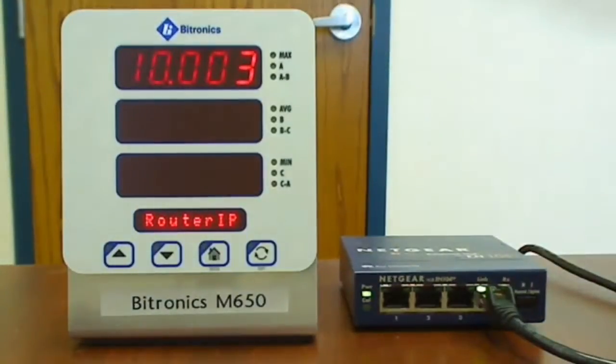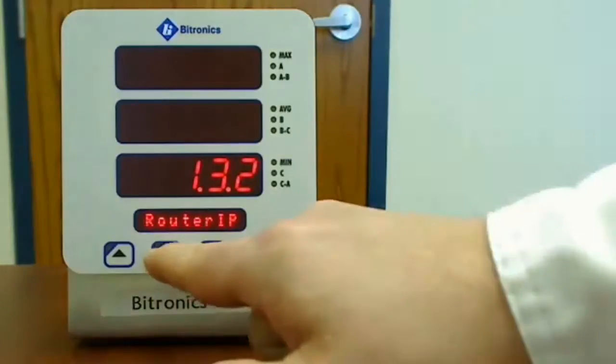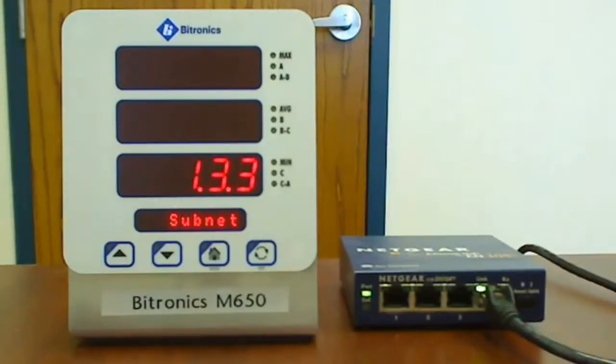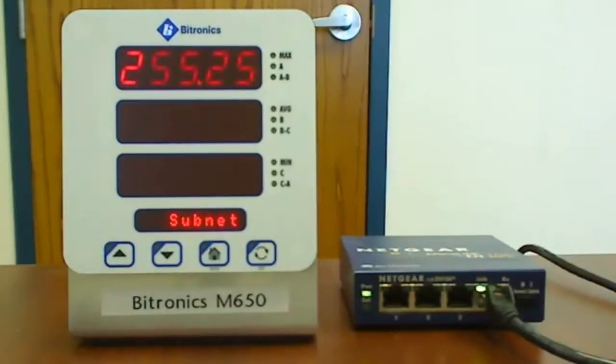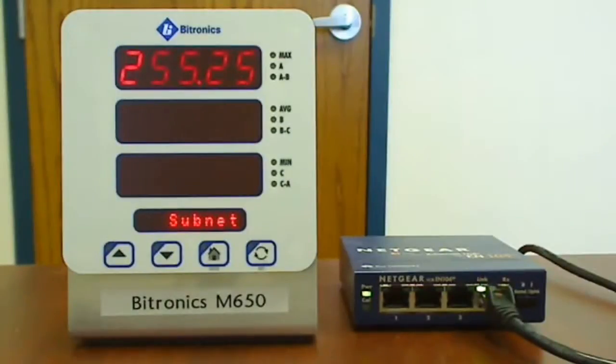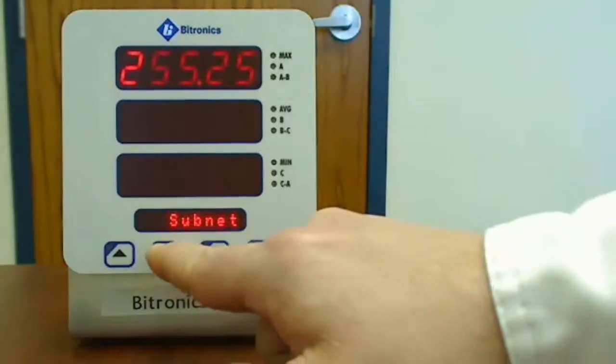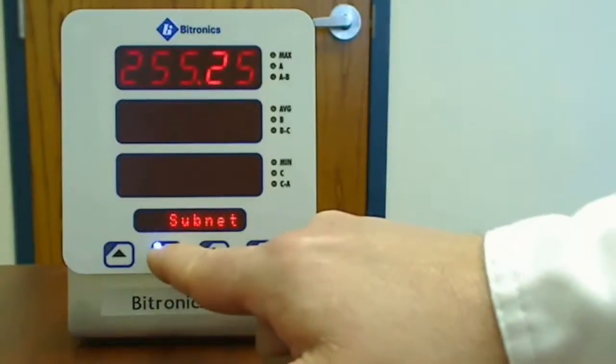Hit the exit key to escape back to the settings index. Hit the down arrow key once to advance to the subnet mask. Hit the enter key to enter this section. We've been asked to mask this meter for a class C network, so that's 255.255.255.0.